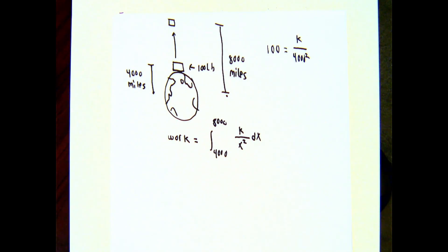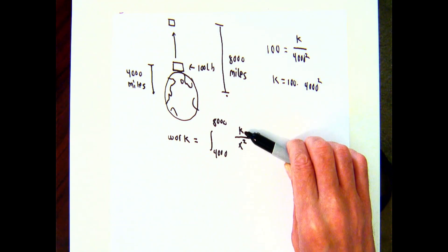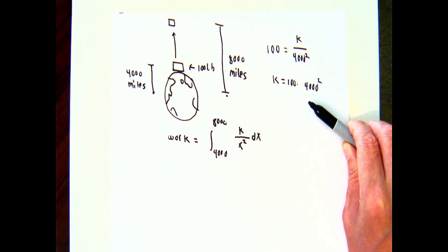When x is 4,000, the force due to gravity is 100 pounds. So it must be true that 100 is k divided by 4,000 squared. I could write that out as a decimal number, or I could just leave it written that way, and then when time comes to calculate, I'll just calculate k as being 100 times 4,000 squared. So I'm going to regard this k as a known fixed number because I know what its value is.